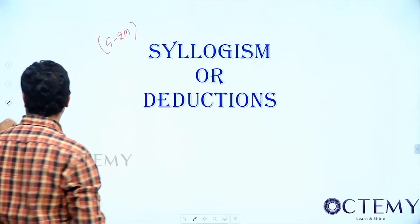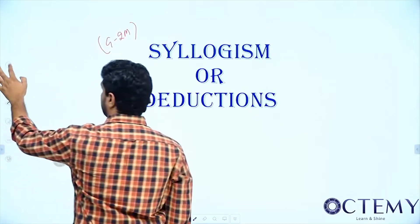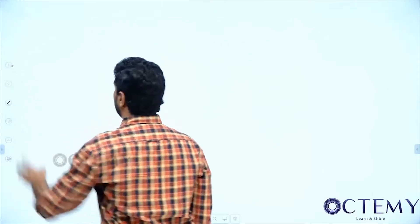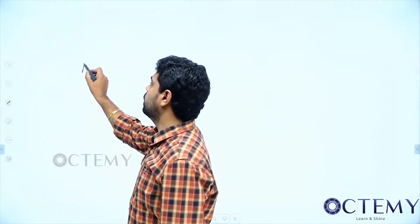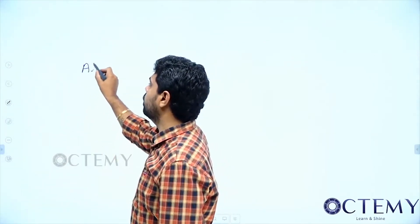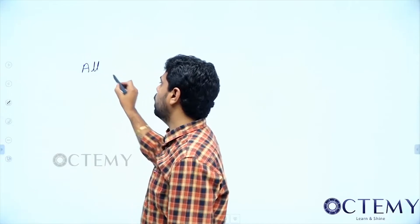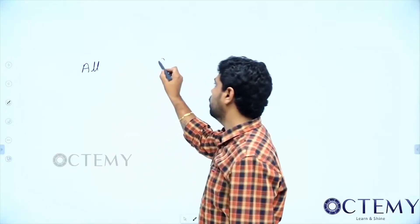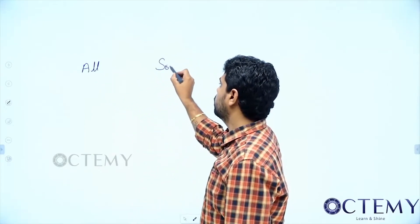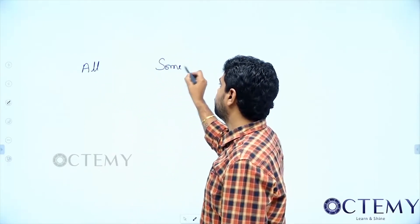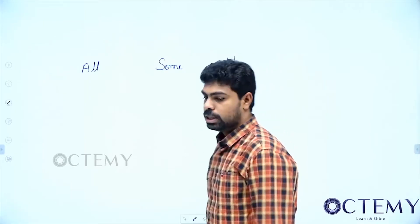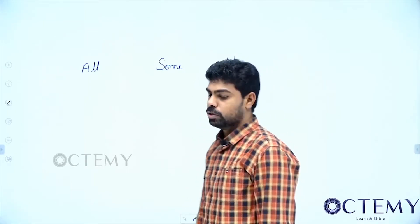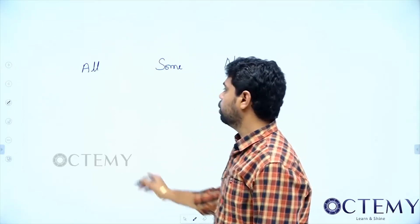Before we get into this, I think you people already know about this. There are 3 relations which are to be known here: all, some, and no. These are the 3 relations which you should be knowing.